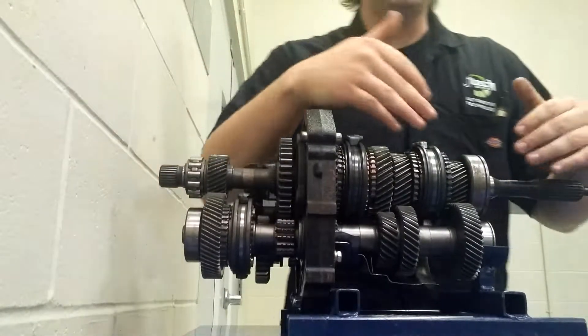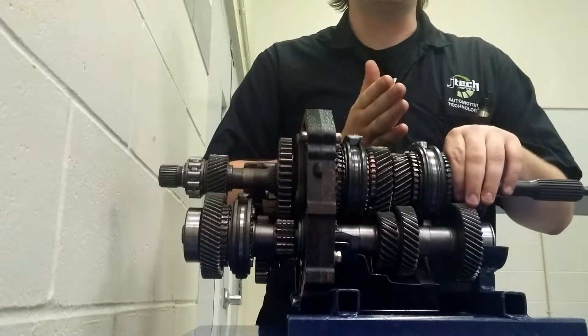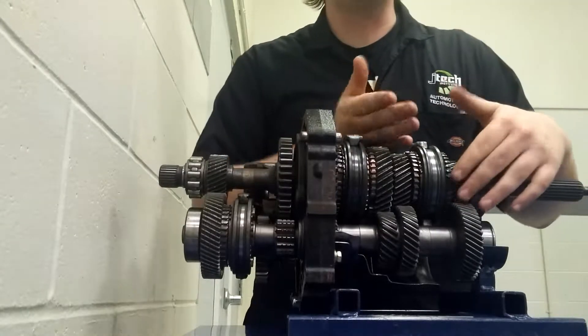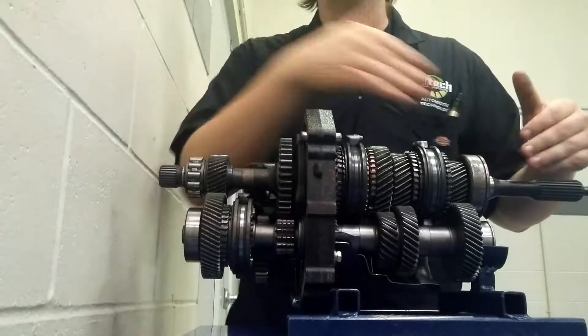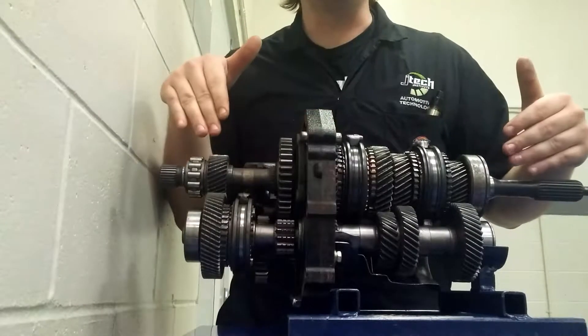With fourth gear, it's kind of different because they're broken apart right here. The power is not going to go down to the counter shaft. When you lock it into fourth gear, it's actually going to lock both these shafts in a one-to-one ratio, and it's going to go straight through.